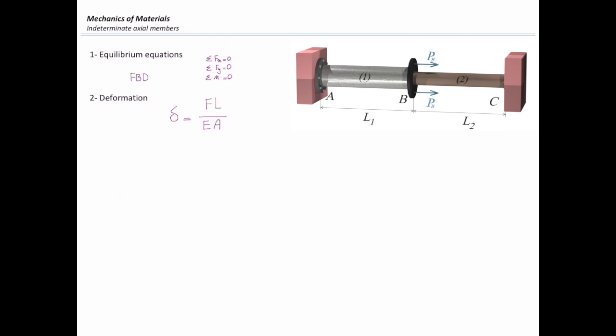The third step, which is the main part of these kinds of problems, is writing a relation between deformations. The compatibility equation describes a relation between deformations, which is based on the geometry of the problem. In this figure, what is the relation between delta 1 and delta 2 in these two shafts? What is the total change in the length of the system?